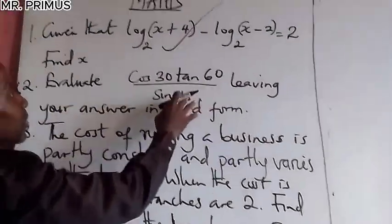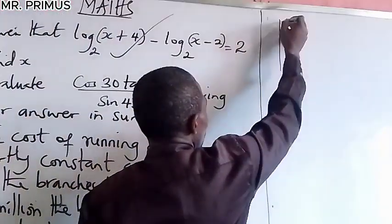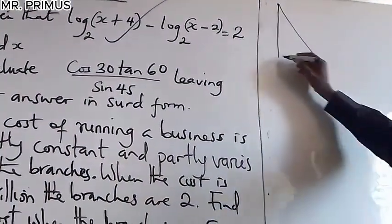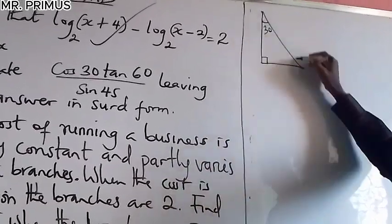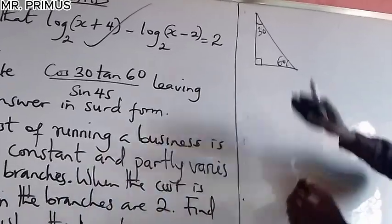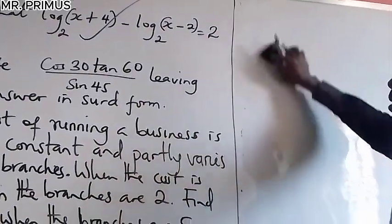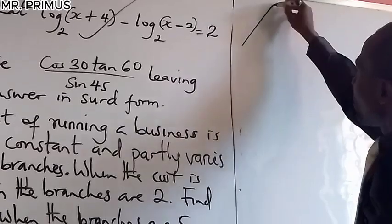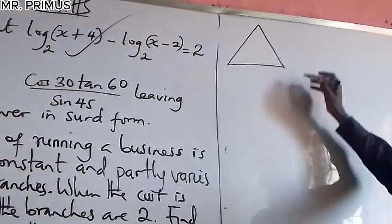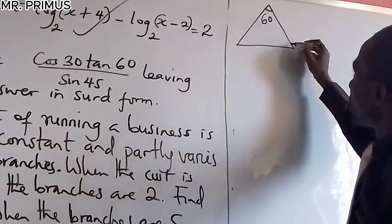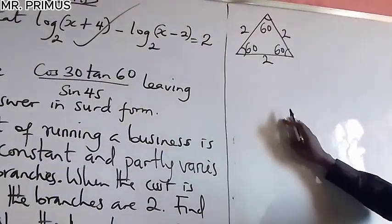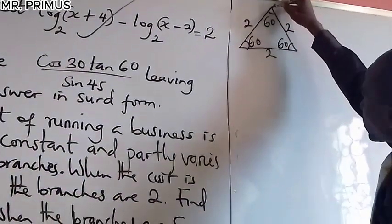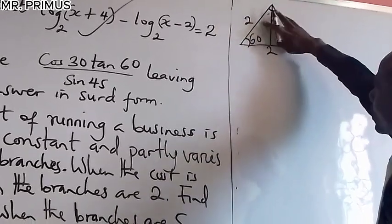Now we use the special acute angles: 30°, 60°, and 45°. For the 30° and 60° case, start with an equilateral triangle where all sides are 2 and all angles are 60°. Dividing it in half gives a right triangle with angles 30° and 60°.